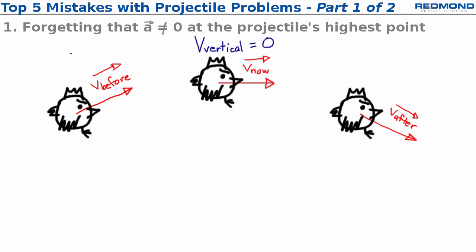In the before snapshot on the left the chicken was going to the right and up with velocity v before. In the after snapshot on the right the chicken is going to the right and down with velocity v after.